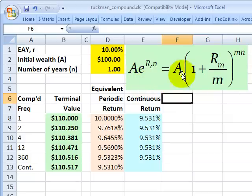On the right, we have discrete compounding where m really is the number of periods per year. So if we want to do monthly compounding, m equals 12.